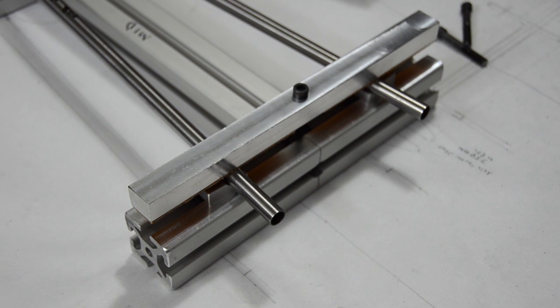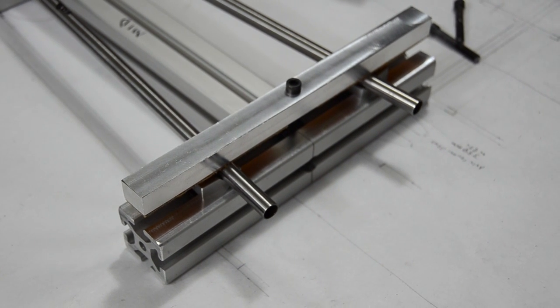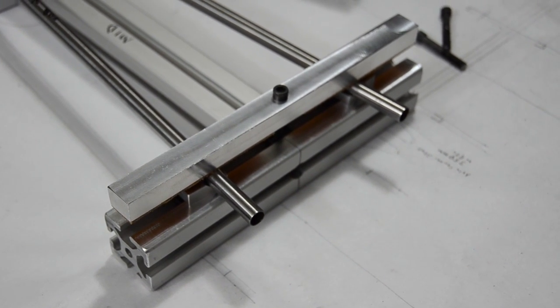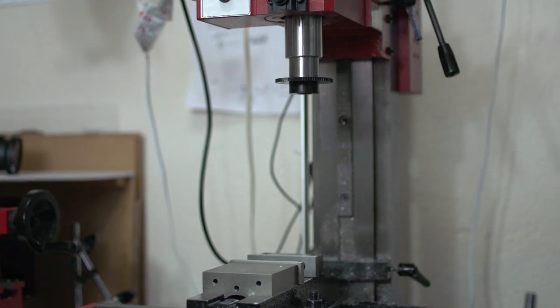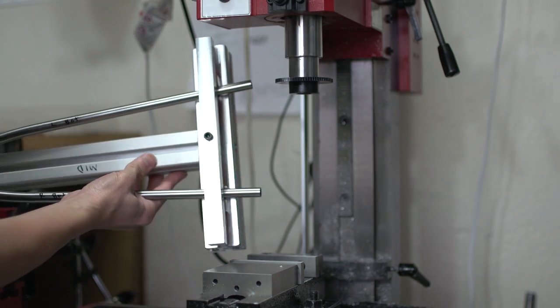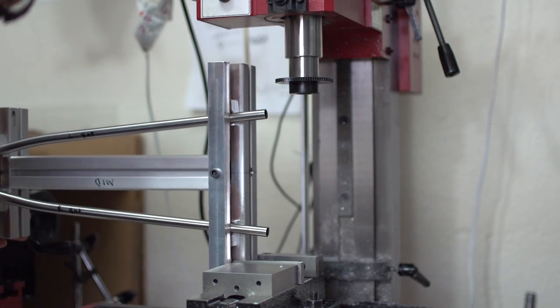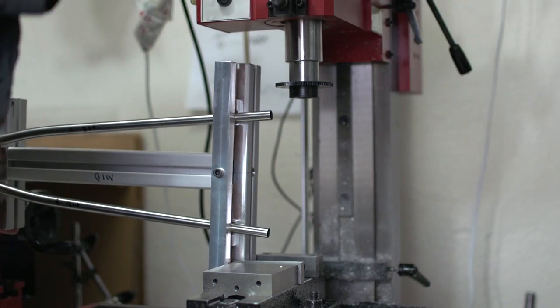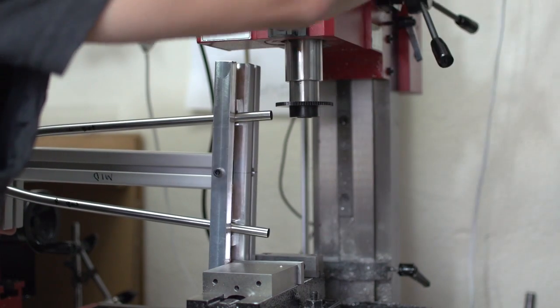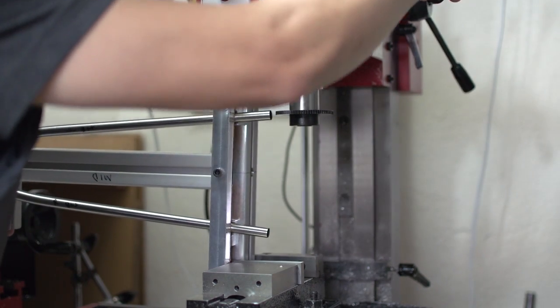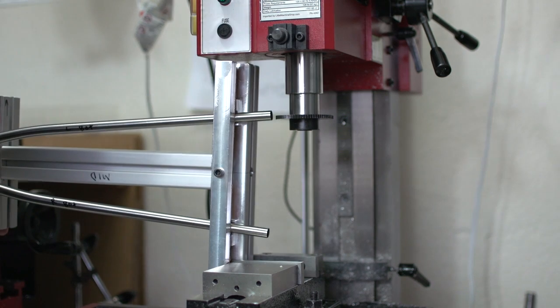But I almost forgot I need to first notch the seat stays for dropouts before I make the seat tube miter cut. So I got a wild idea and thought maybe I can notch the seat stays while still in the fixture. And the question is will it fit? And they fit!